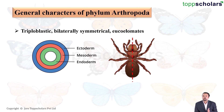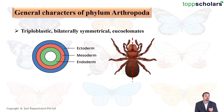Now pay attention to the diagram of a spider, which is one of the arthropods. The spider's body can be divided into two equal halves by a single plane passing through the center. This means that arthropods have bilateral symmetry. Finally, arthropods have a true coelom, making them eucoelomate.